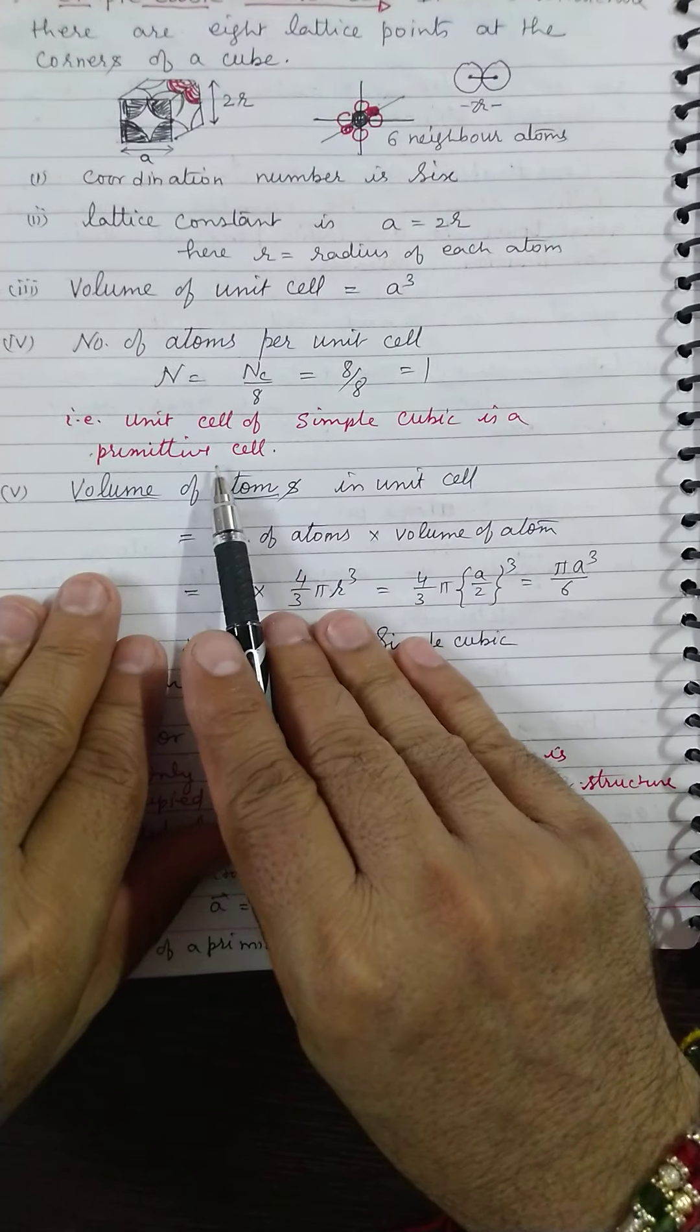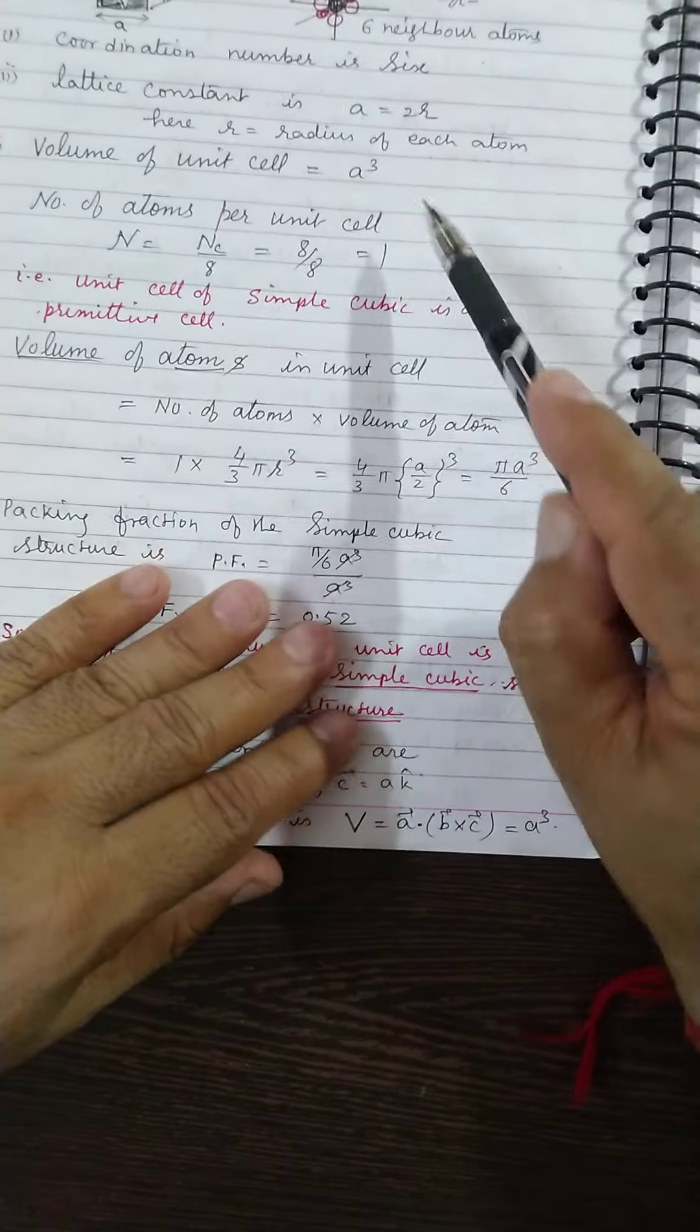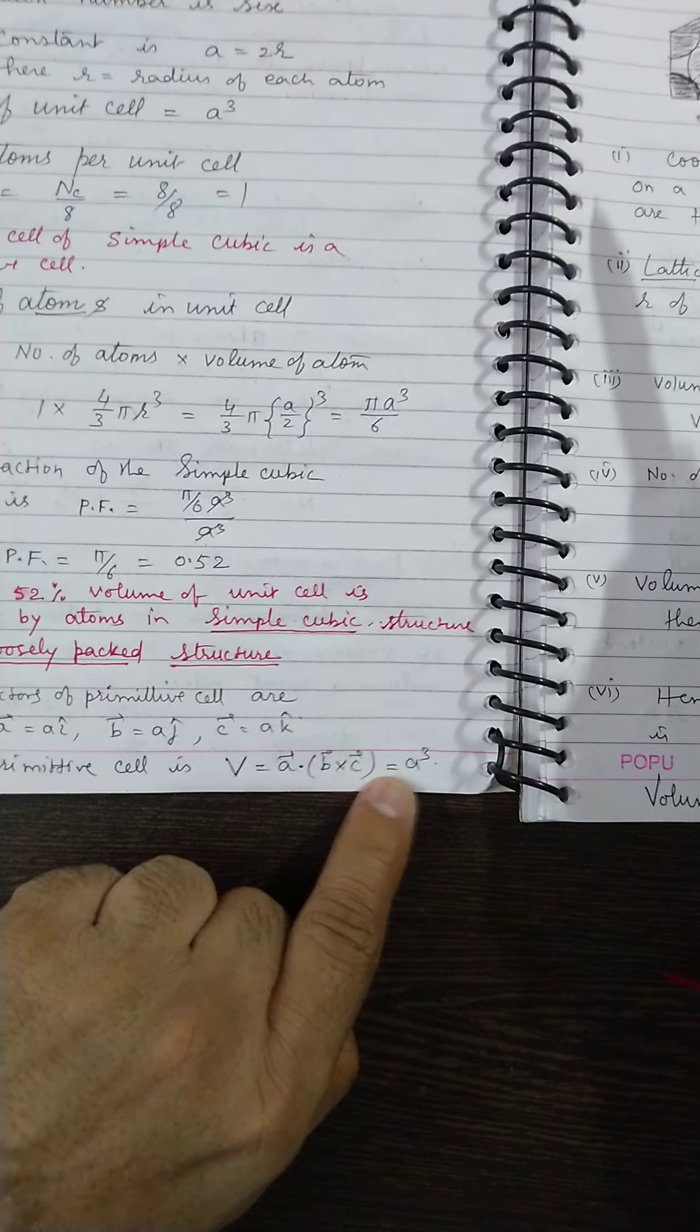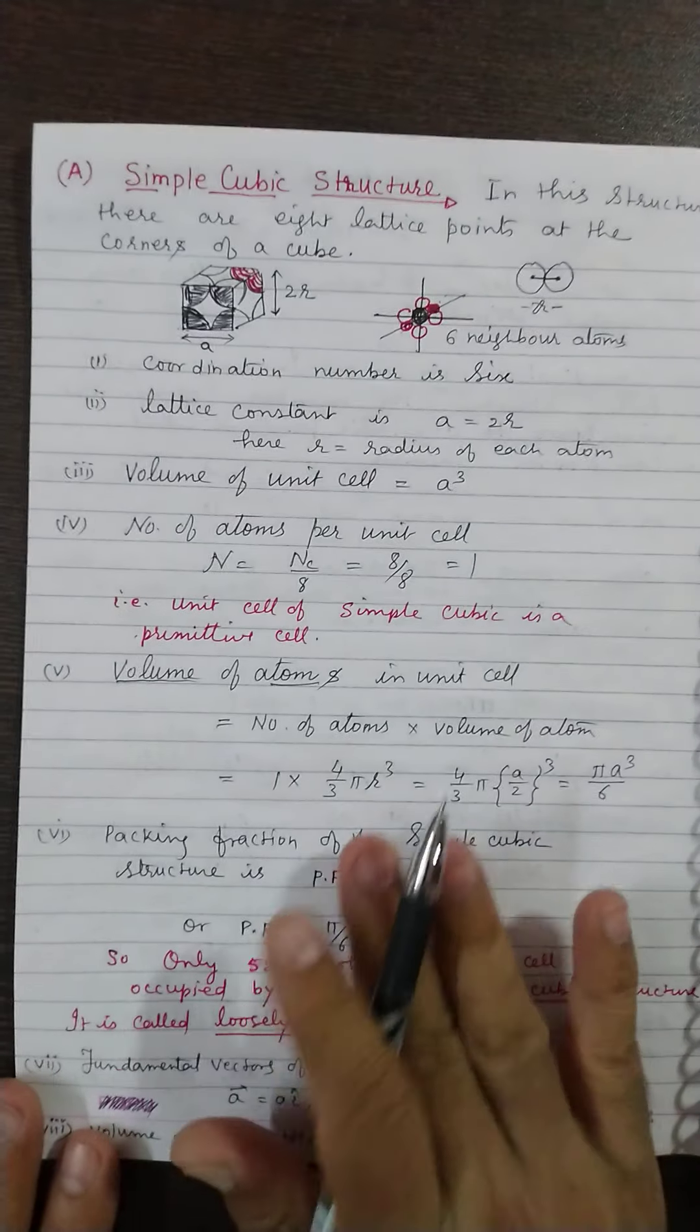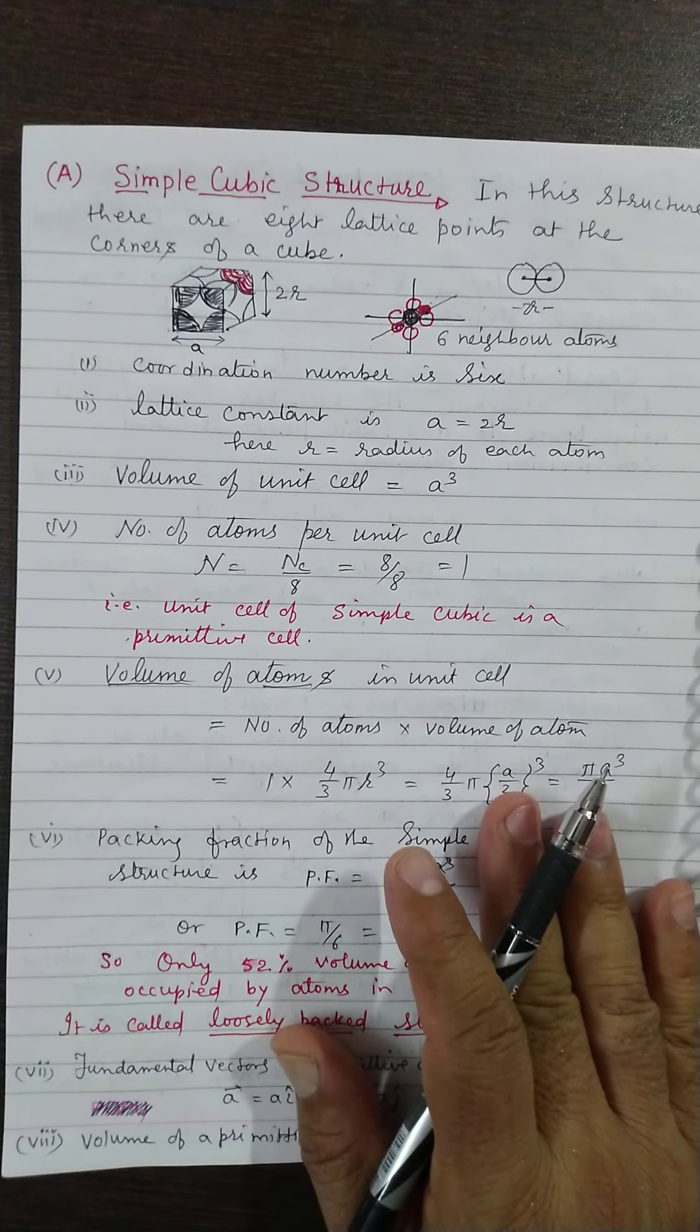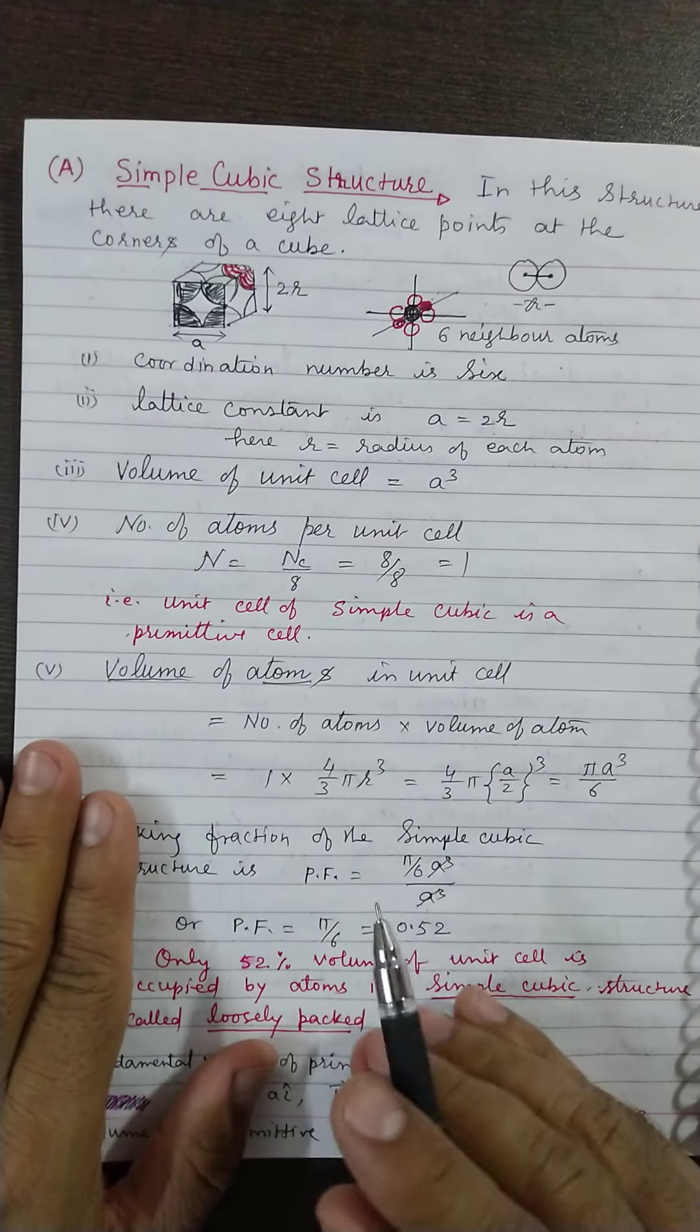If I put all these values I will get A³, and this is what I told earlier: that unit cell of simple cubic is a primitive cell. You can see both are having the same value A³. This confirms that these materials have a small packing fraction.